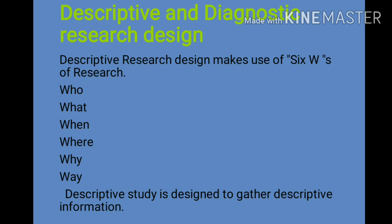The six W's are: who, what, when, where, why, and how. 'Who' refers to the part of the study and subject — who is being studied. 'What' refers to what information is to be collected. 'When' refers to the time the information is to be collected. 'Where' refers to where the respondents should be contacted. 'Why' refers to the objective of obtaining information. And 'how' refers to the method used.